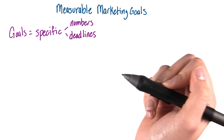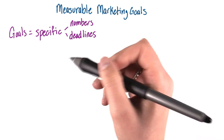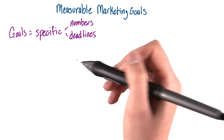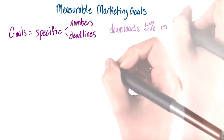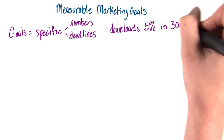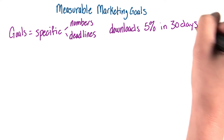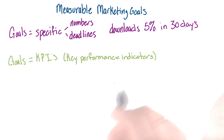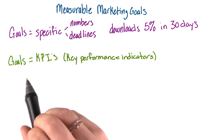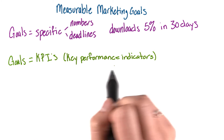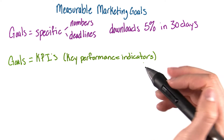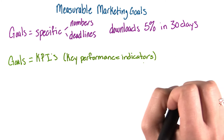Your goals need to be really specific with numbers and deadlines. For example, increasing app downloads by 5% in 30 days. You can use these goals as your KPIs, or key performance indicators, for the next few months.